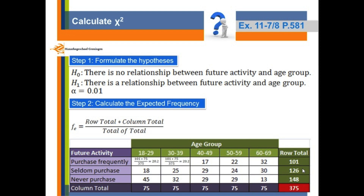We do it also for the second one. Because the column totals are the same, the expected frequency for the rows are the same. And then you do it for each cell. All the numbers in red are now your expected frequency.